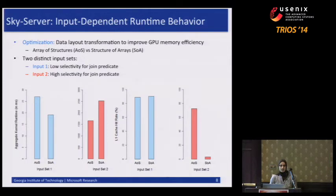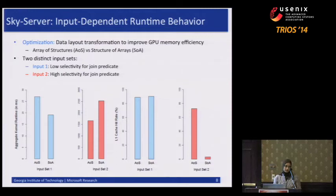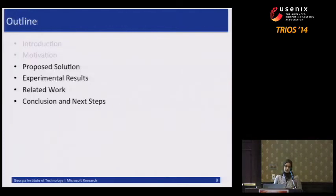This shows the interaction between global memory and cache, and how even for a well-known optimization you cannot assume it will always do well. It's really input-dependent, and it really calls for a solution that can do this more dynamically. That's what we want to propose.